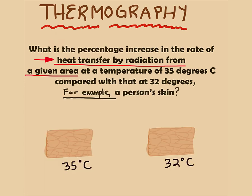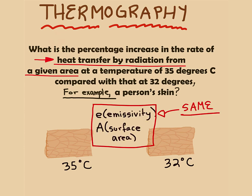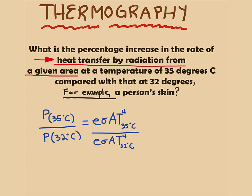For this example, we're going to be using human skin at different temperatures. And since it's the same object, we're going to have the same emissivity and area. When we make a ratio and compare it to temperatures, emissivity and area cancel out.